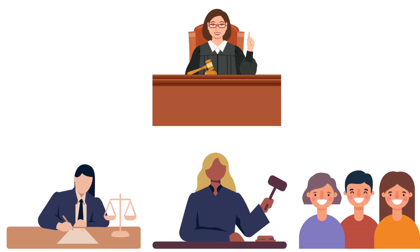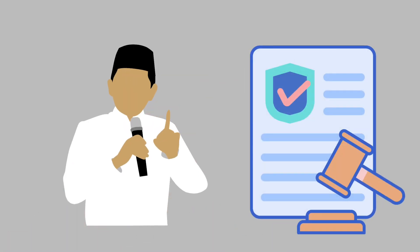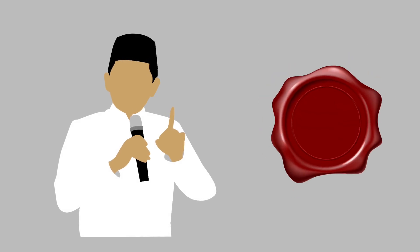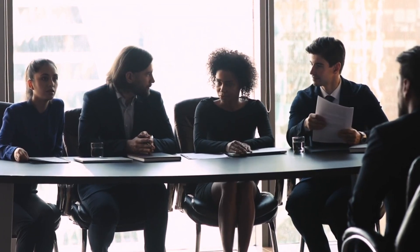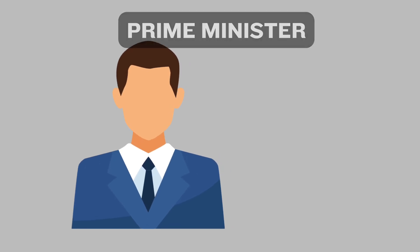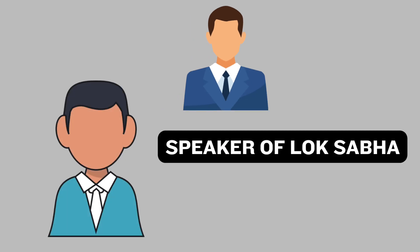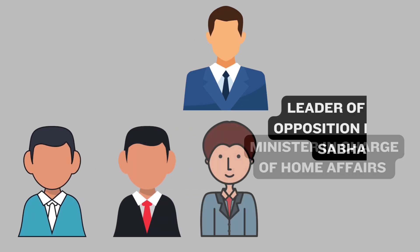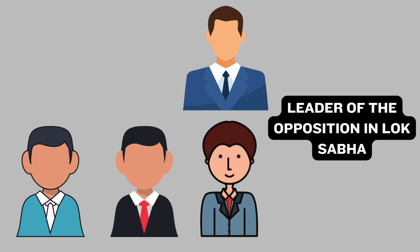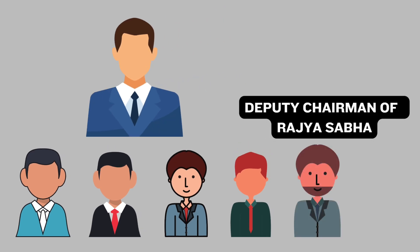The chairperson and other members of the National Human Rights Commission are appointed by the President of India through a warrant under the President's hand and seal. Before making these appointments, the President must obtain the recommendations of a committee composed of: the Prime Minister, who serves as chairperson; the Speaker of Lok Sabha; the Minister in Charge of Home Affairs; the Leader of the Opposition in Lok Sabha; the Leader of the Opposition in Rajya Sabha; and the Deputy Chairman of Rajya Sabha.